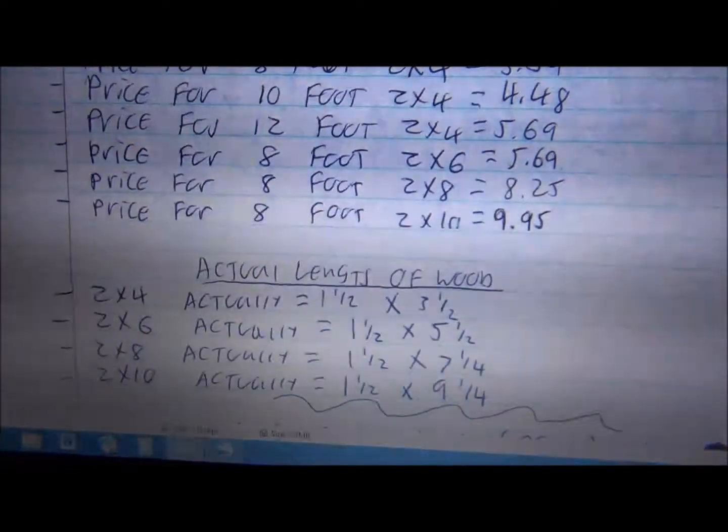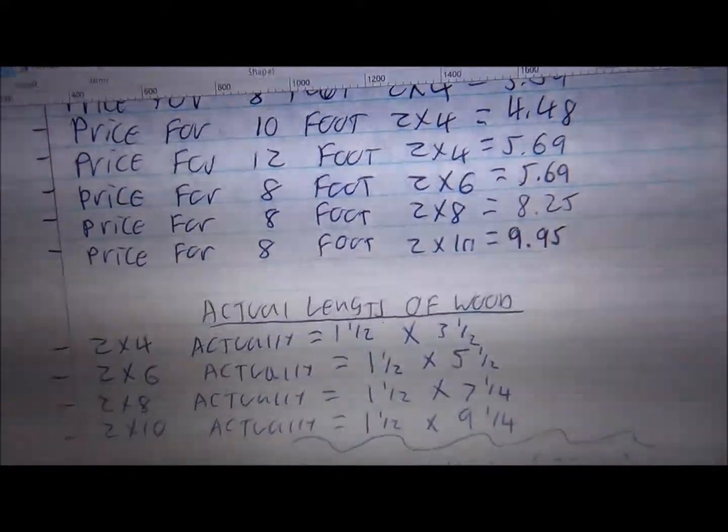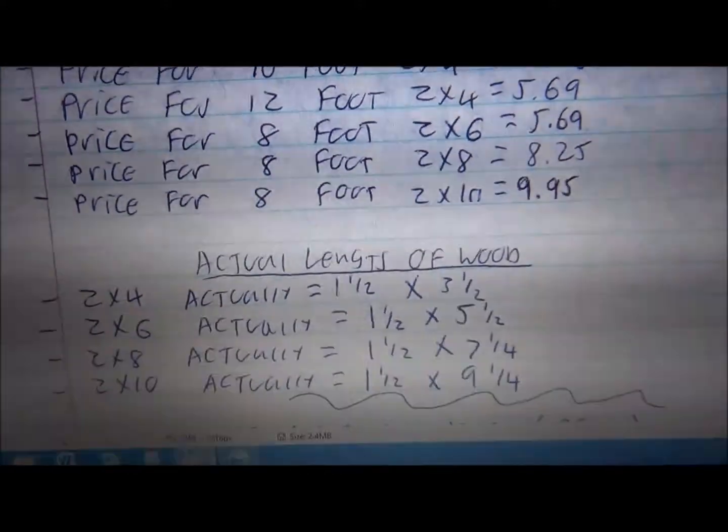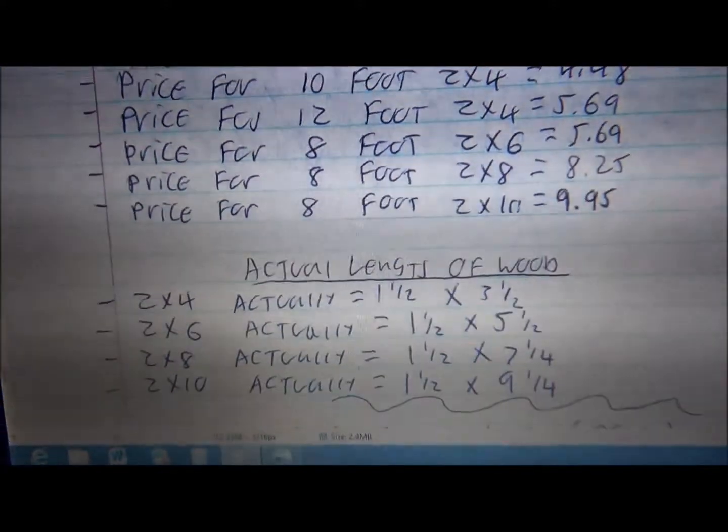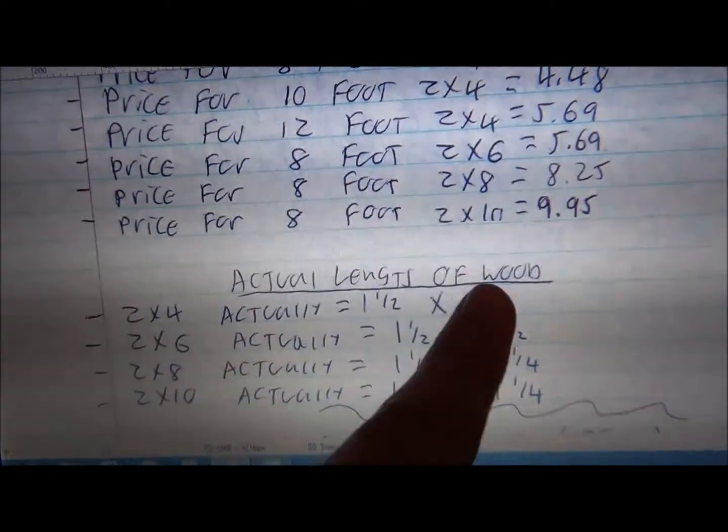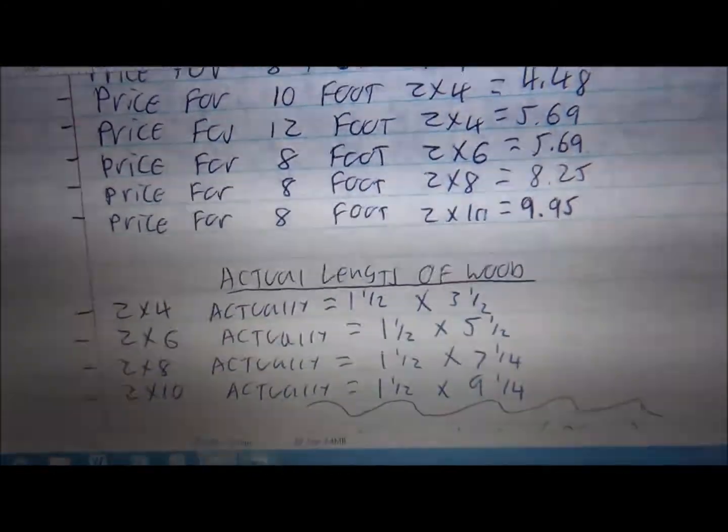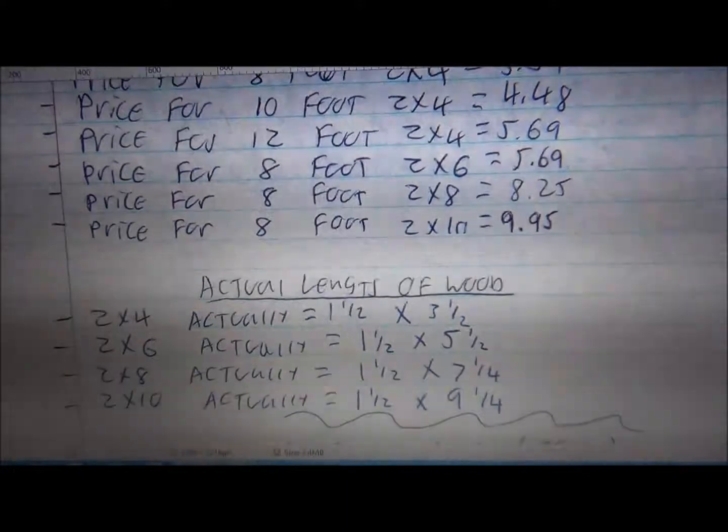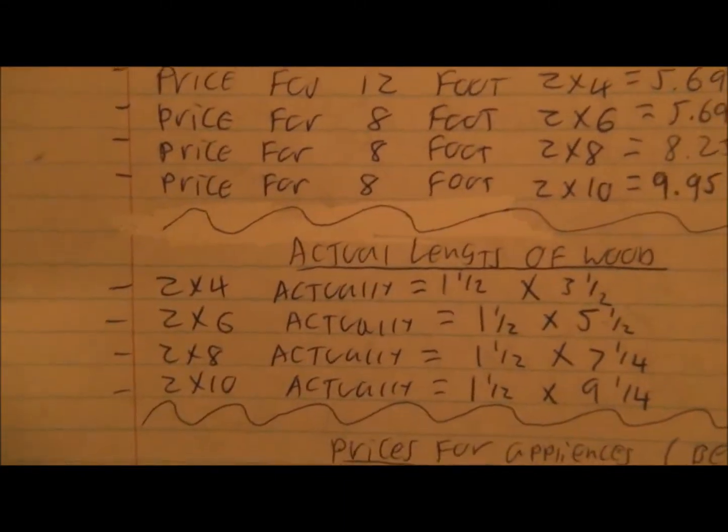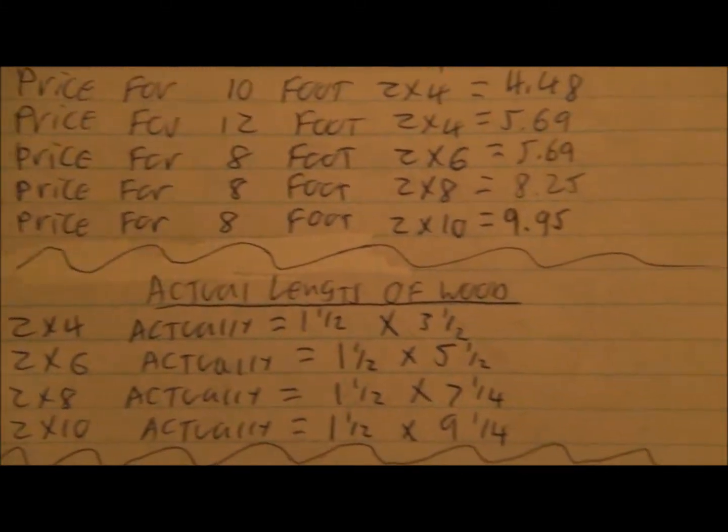As you can see right here, right under the price for 8-foot 2x10s, it looks just like a regular line. But it's not, because when I scanned it in, it had that correction fluid stuff on it. I cleaned it up. You want to know how? I'll show you.